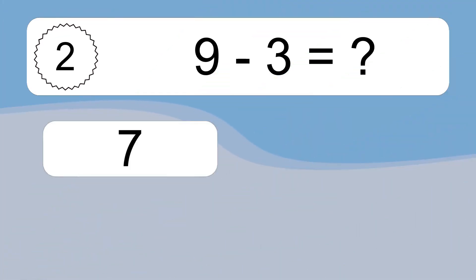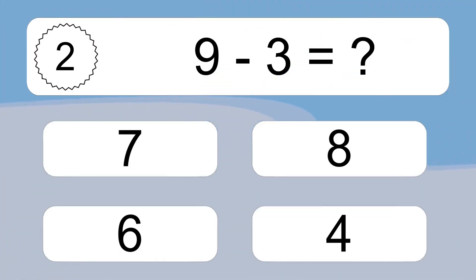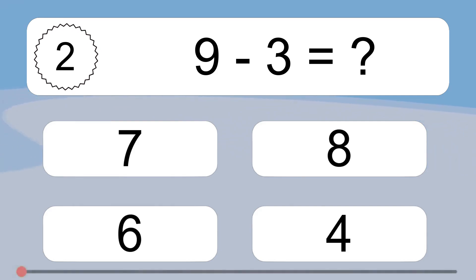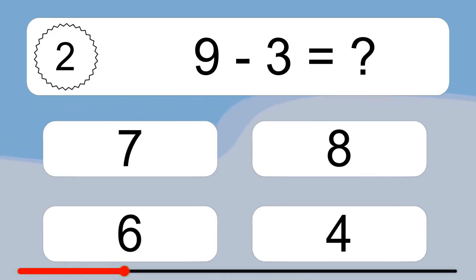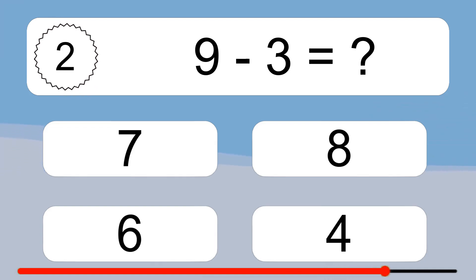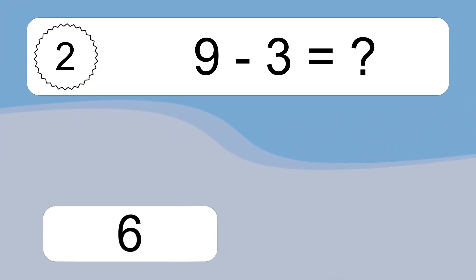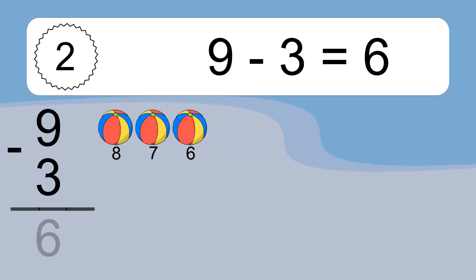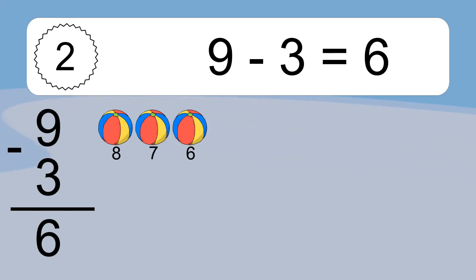9 minus 3 equals what? 9 minus 3 equals 6. Let's count it: 8, 7, 6.